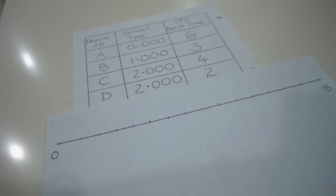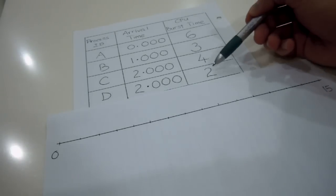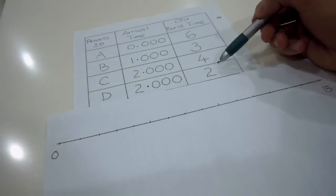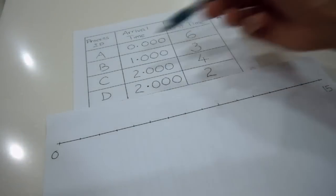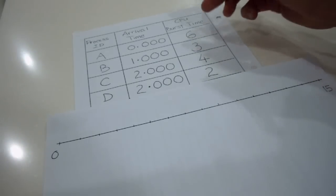Shortest remaining time first is almost having the same concept with shortest job first, just that you look for a lower CPU burst time. So one might look into CPU burst time of 2 milliseconds because it's having the lowest one, which is D, followed by process B with 3, followed by C having 4, and A with 6.